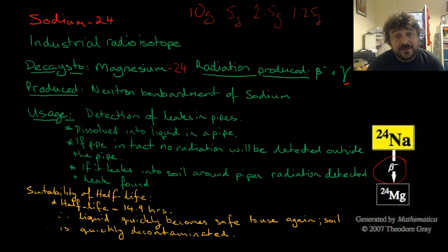The half-life is actually quite short. So because it's quite short, it's going to decay from sodium into a stable magnesium isotope. If we dissolve 10 grams, we're down to about 1.25 grams in 45 hours. So it quickly becomes safe and able to be used again. And that's really important.